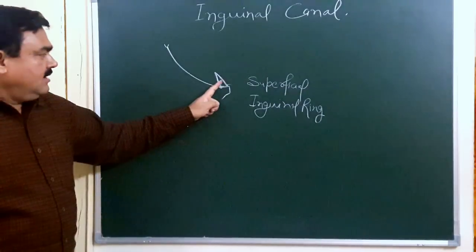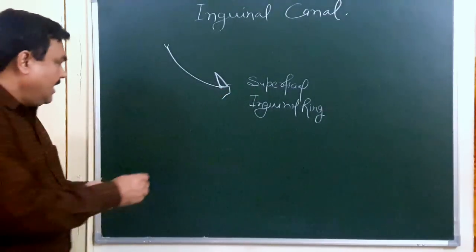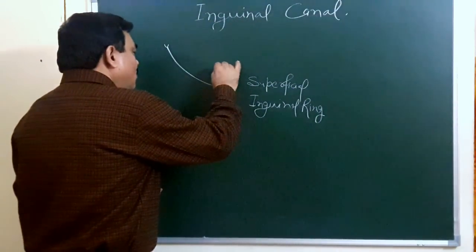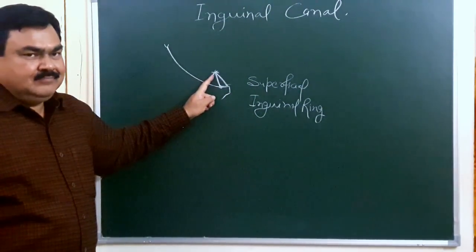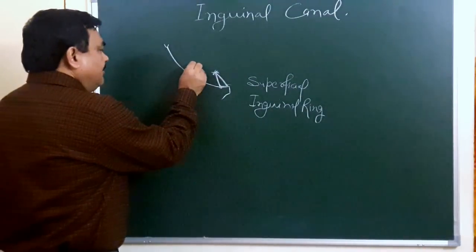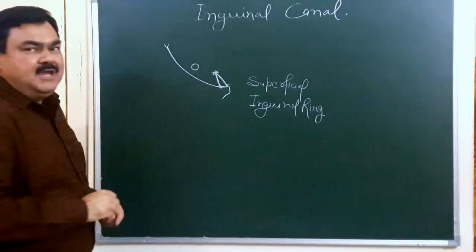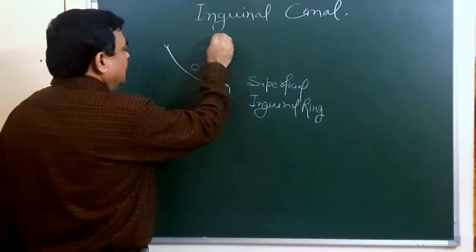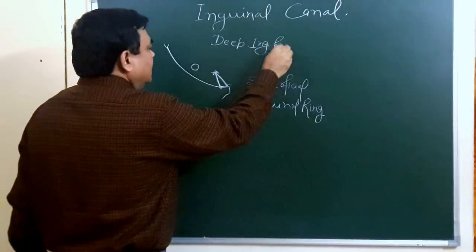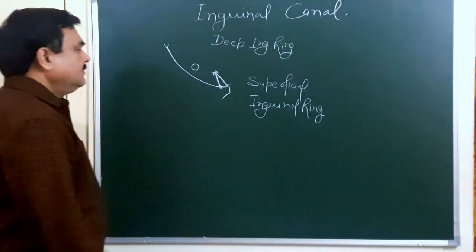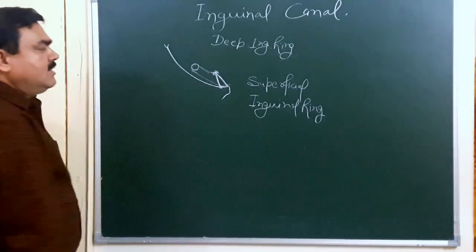The lateral boundary is the lateral crus, and the medial boundary is the medial crus. The base is formed by the pubic crest, and here are the intercrural fibers present at the apex. This is the position of the deep inguinal ring. And this is the inguinal ligament.